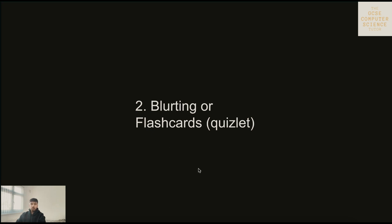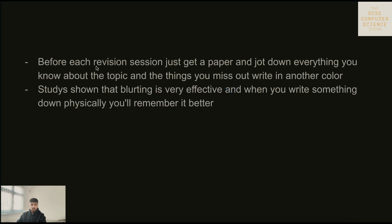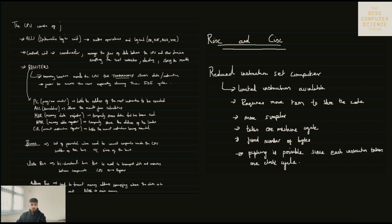Since we've learnt the definitions now, we have to remember them. The best way to remember something is to blurt it out on a piece of paper, or if you're not that type of person you can use Quizlet and flashcards. But personally I was using blurting as a key way of remembering all the definitions. Before each revision session just get a piece of paper and write down everything that you know about the topic. For example, 1.1 CPU - what I would do is basically just go through all the registers. This is my notes and basically this is how I used to blurt things out.